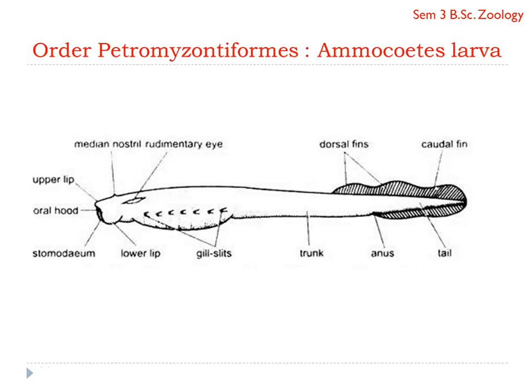Hello everyone. In this presentation we are going to deal with the Ammocoetes larvae and its metamorphosis. Ammocoetes larvae is a larval stage of members of the order Petromyzontida. We are going to see the structural details and metamorphosis of the Ammocoetes larvae.